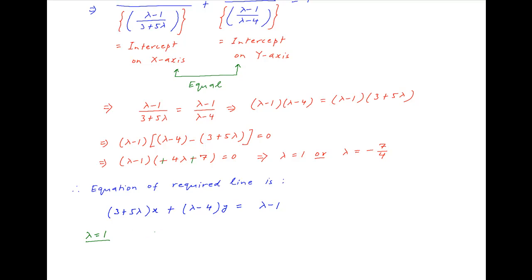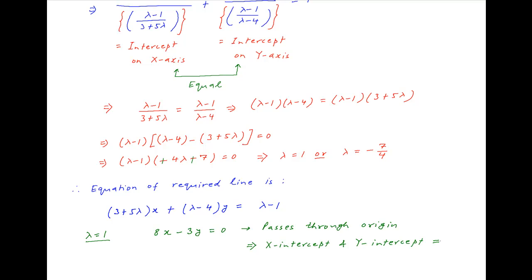In the first case, when lambda equals 1, this equation becomes 8x minus 3y equals 0, which passes through the origin. Therefore both the intercepts on the x-axis and the y-axis are equal to 0. Since this is the trivial case, we rule it out.